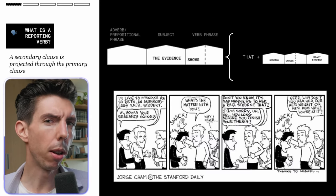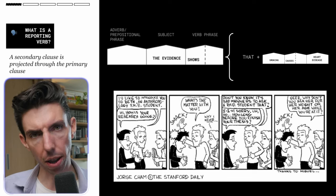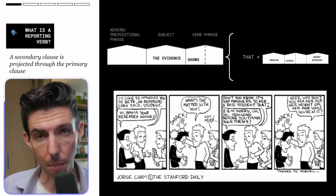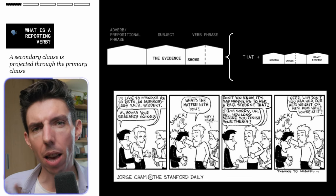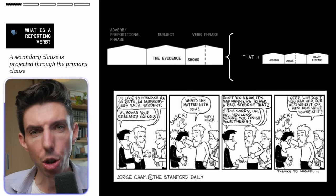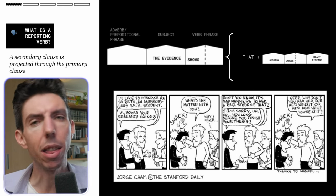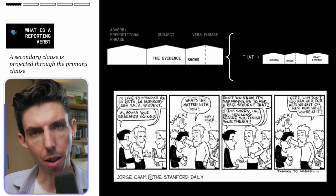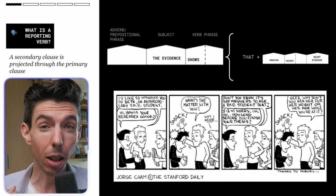The distinctive thing about a reporting verb is that you've got a clause inside of a clause. There's an action — somebody is saying something, thinking something, or feeling something. That's one level of action. And then above that, there's another clause being projected through the first clause. You have a main clause, like 'I think,' and then through that clause, there's another clause being projected. A way to imagine it is really to look at it like a comic strip.